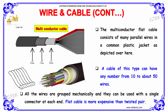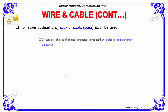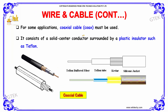Flat cable is more expensive than twisted pair. For some applications, coaxial cable must be used. It consists of a solid center conductor surrounded by a plastic insulator such as Teflon.